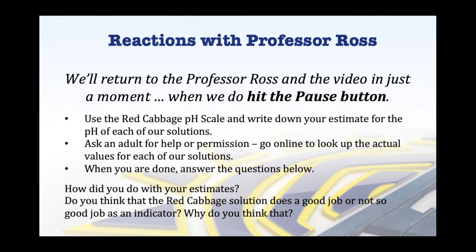When we return to Professor Ross, hit the pause button and take a few minutes. Using the pH scale that we have on your screen, write down an estimate for each of the solutions. Remember that pH is on a scale from 0 up to 14. Then ask an adult for help or permission and go online to look up the actual values of each of our solutions. How did you do with your estimates? And think to yourself: was the red cabbage solution a good indicator or not, and why do you think that?